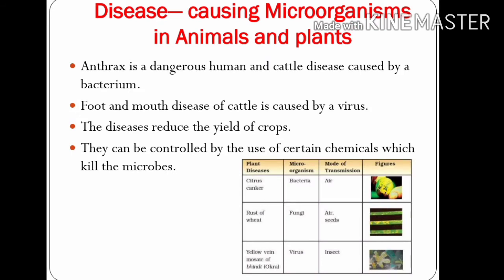We have discussed how microorganisms are harmful to human beings. Now let's discuss how they cause disease in animals and plants. Anthrax is a dangerous human and cattle disease caused by a bacterium. Foot and mouth disease of cattle is caused by a virus. Several microorganisms cause diseases in plants like wheat, rice, potato, sugarcane, orange, and apple. These diseases reduce the yield of crops. They can be controlled by certain chemicals which kill the microbes, and such chemicals are known as pesticides.